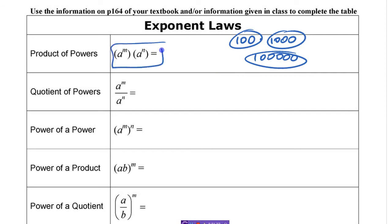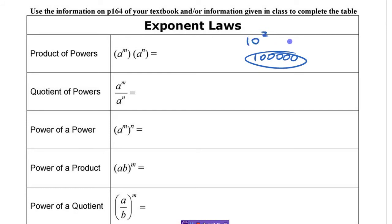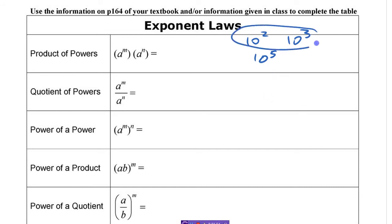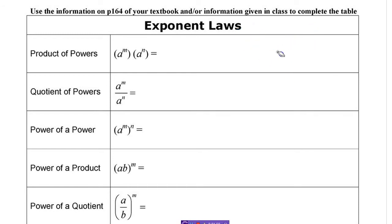That's this rule here. In grade 9 you'd think of 100 and 1,000 as 10 to the 2 and 10 to the 3 — that's the same as 10 to the 5. If you're multiplying two powers with the same base, you just add the exponents. So this is going to be a to the m plus n.